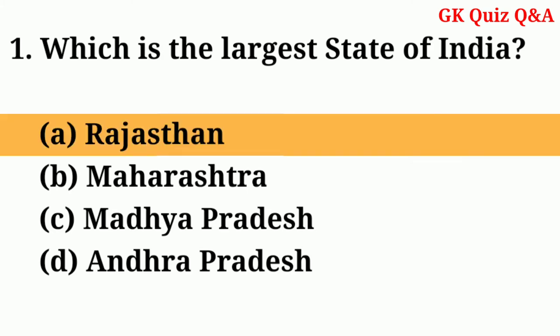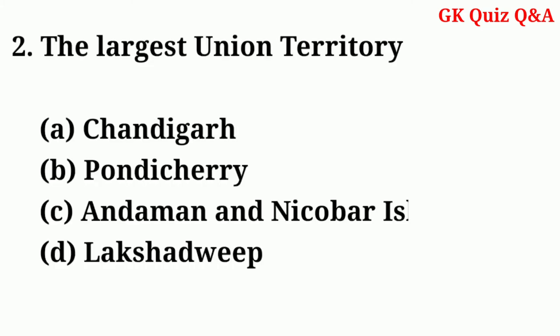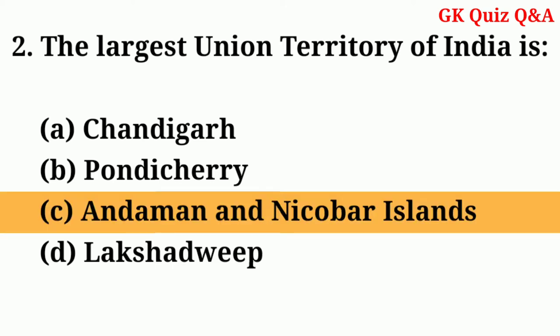Which is the largest state of India? Answer: Rajasthan. The largest Union Territory of India is? Answer: Andaman and Nicobar Island.